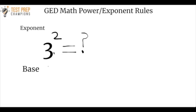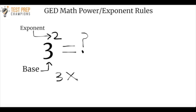Here we have the expression three squared. You could also call this three raised to the second power, or three raised to the power of two. The three is the base and the exponent is two. The exponent tells us how many times the base is going to appear in multiplication. So since the exponent is two, the base will appear in multiplication twice. To solve this, we just do three times three, which equals nine.